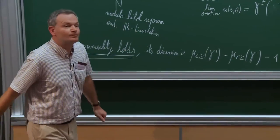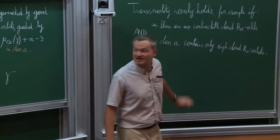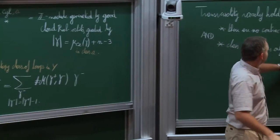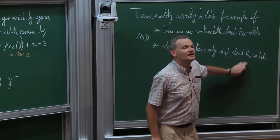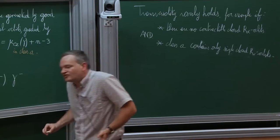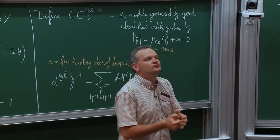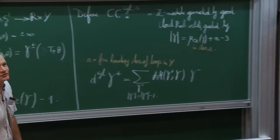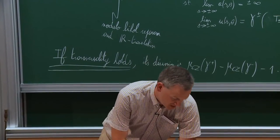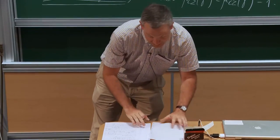The second condition—the free homotopy class A contains only simple closed Reeb orbits—is cheap; you can always choose this class this way. But the difficulty is that maybe this small piece of the invariant is too small for whatever you want to do with it. So that's quite frustrating that we cannot make these things work, at least without polyfolds.